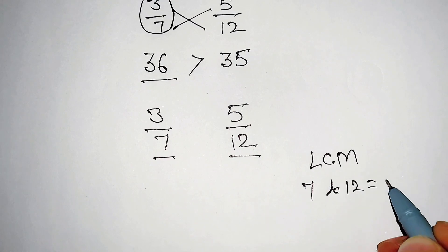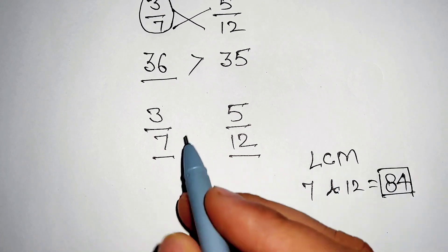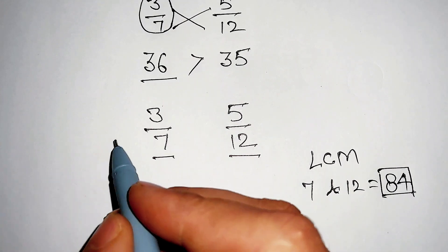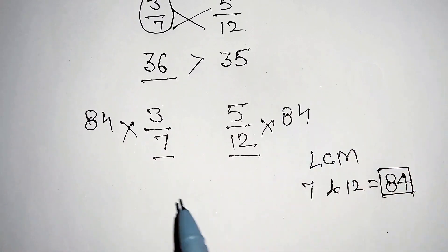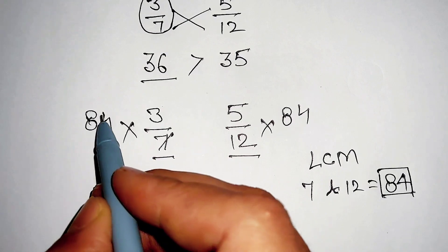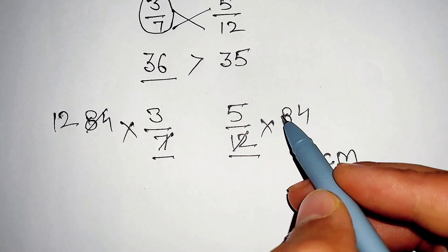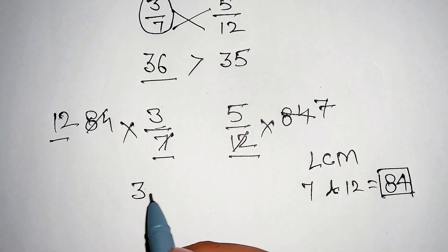If we multiply both these numbers with 84 we get this same number. Let's see. Here 7 will cut 84 at 12, and 12 cut 84 at 7. 7 multiplying 3 is equal to 36.